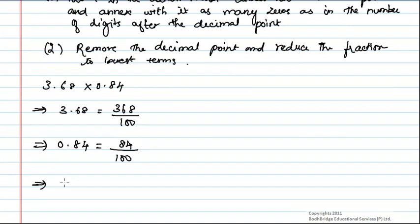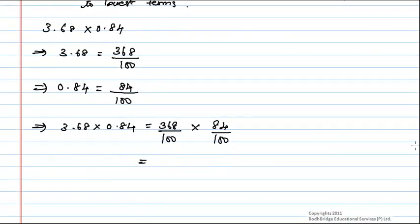Now, we have to find 3.68 into 0.84, which is equal to 368 by 100 into 84 by 100. We know that 368 into 84 is equal to 30912, which divided by 100 into 100 is equal to 3.0912.